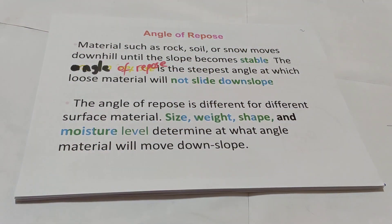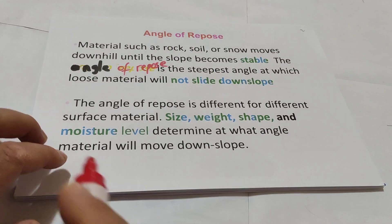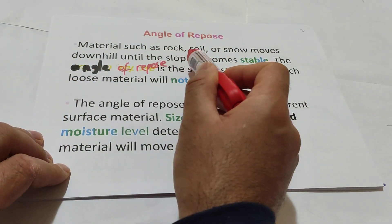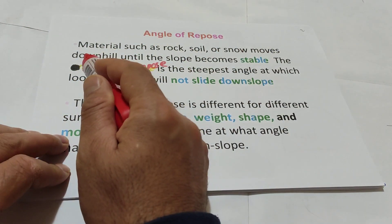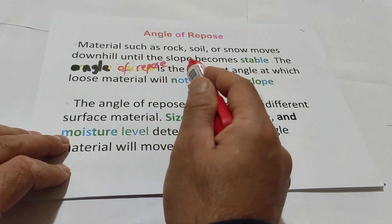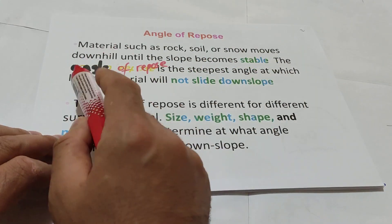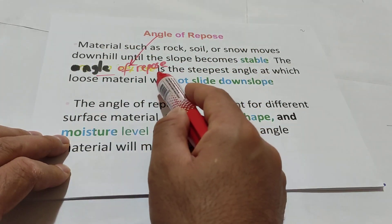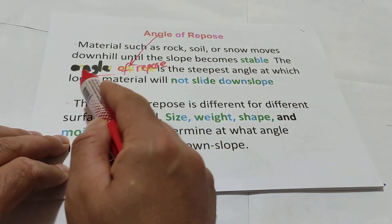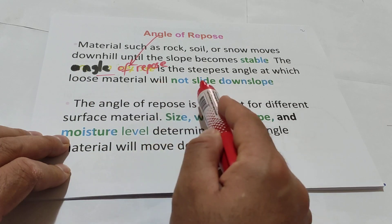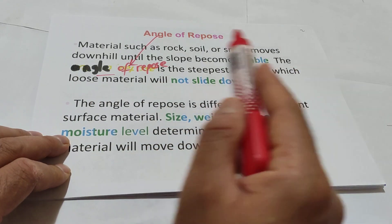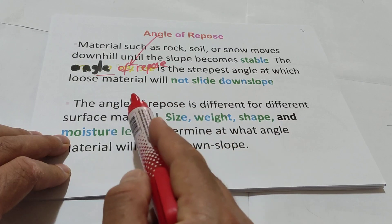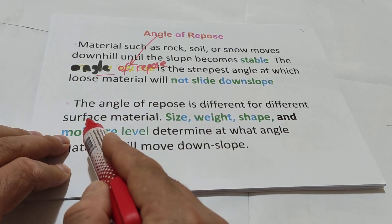When part of mass moves from one place to another, the angle of repose is very important. Materials such as rock, soil or snow move downhill until the slope becomes stable. The angle of repose is the steepest angle at which loose material will not slide downslope. The angle of repose is different for different surface materials.